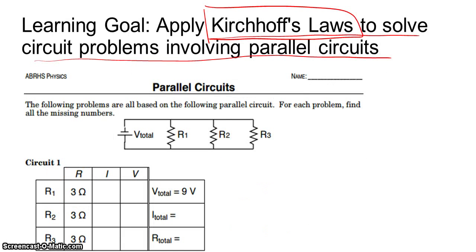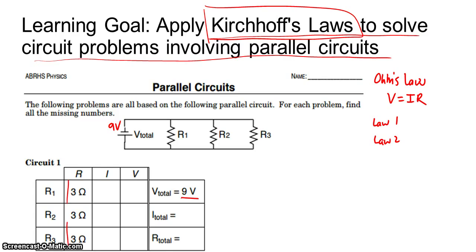Let's apply these along with Ohm's Law — V equals IR — to solve for some unknowns. Right off the bat, we've got a 9-volt battery. We can apply the first law, the second law, or Ohm's law to figure out this problem. You might say: I have three resistances, so I can find the total resistance. Yes, you can do this.